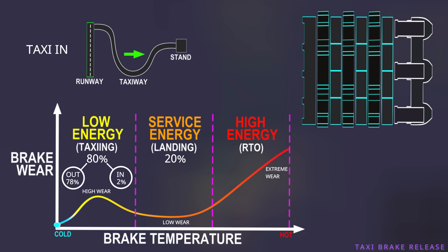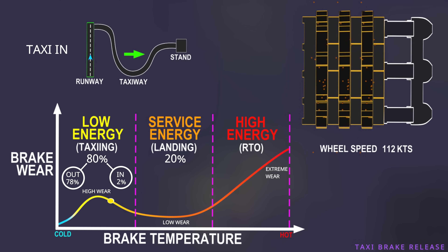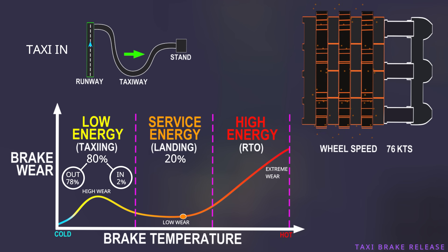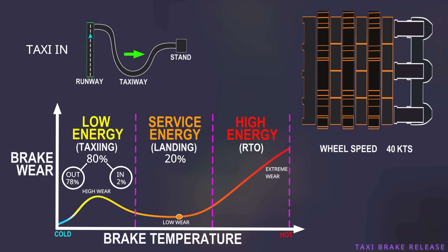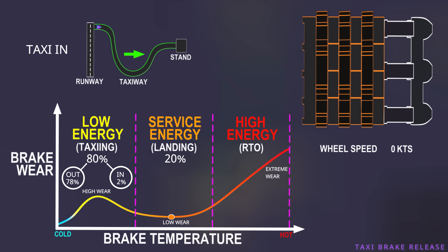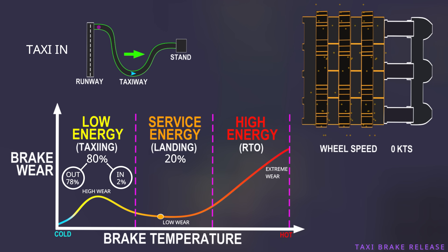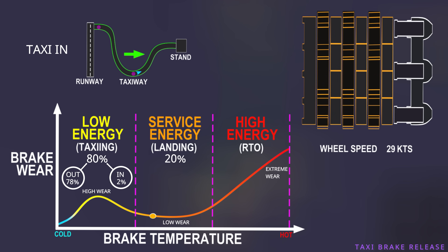Once the aircraft lands and the brakes are applied at a higher wheel speed, the temperature immediately rises to the optimal range and provides the best braking performance. As the aircraft slows down and enters the taxiway, even though the speed has reduced, the brakes are still hot. Therefore, brake application during taxi-in is performed at a higher temperature, resulting in less brake wear.